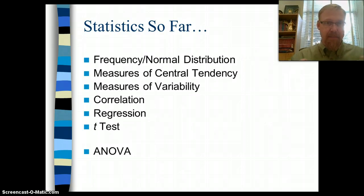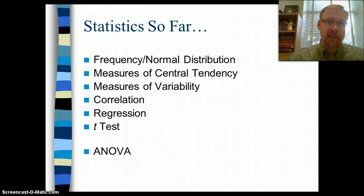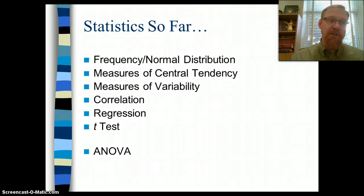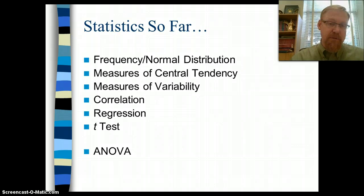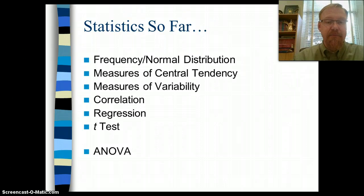We talked about how we could look at that using the normal distribution and the tails of the distribution to calculate the probability that we were committing a Type 1 error, which simply means that we were rejecting the null hypothesis when we shouldn't have been. Now we're taking it a step further and looking at ANOVA. ANOVA is unique because it also looks at the differences between groups, but it's more than two groups now, and it's calculated a lot differently than the t-test.